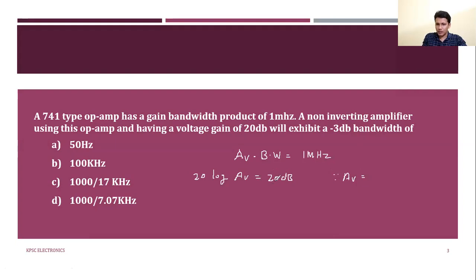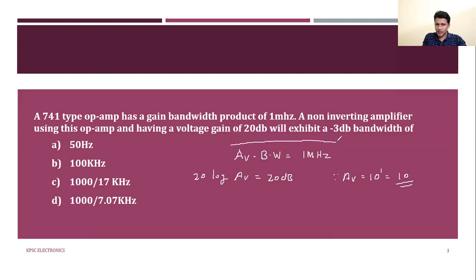So AV = 20/20 = 1 item, meaning 10 raised to 1, which gives AV = 10. The gain bandwidth product equation gives: gain multiplied by bandwidth equals 1 MHz, which is 1 × 10 raised to 6.